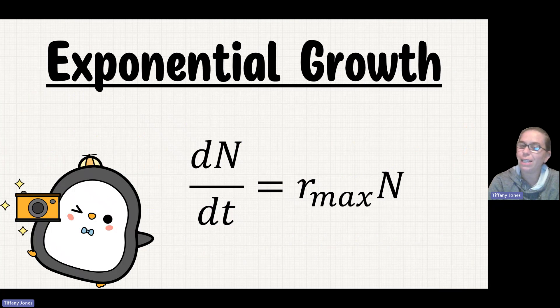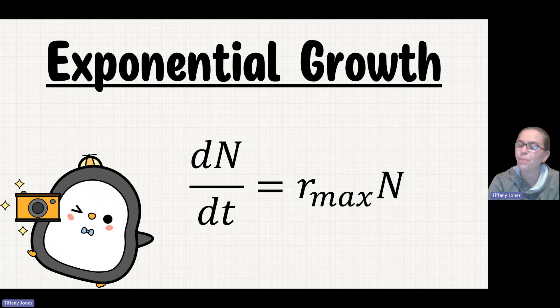The formula for this is dN/dt equals r_max times N, where dN is the change in population size, dt is the change in time, r_max is the maximum per capita rate of increase, and N is the population size.